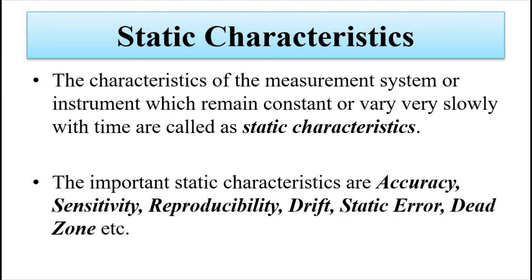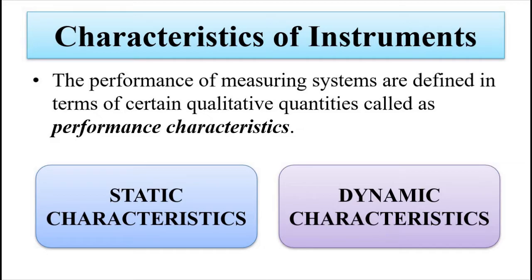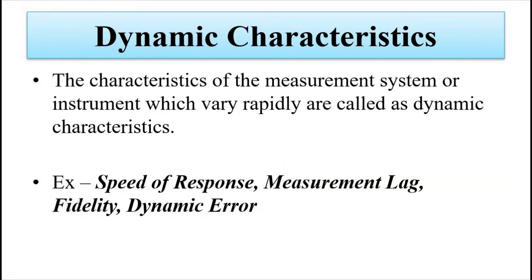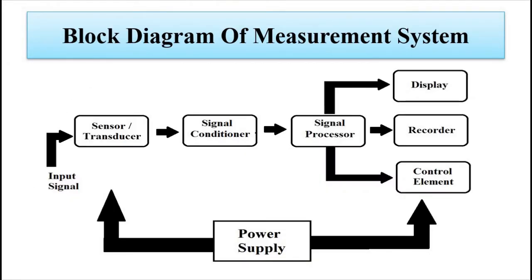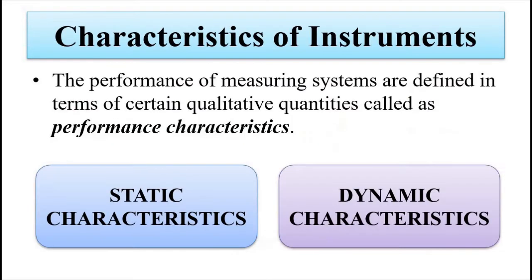Now we'll discuss the second part — the dynamic characteristics. The dynamic performance parameters are basically the parameters which vary very rapidly with respect to time. We know a basic measurement system consists of these two sets of performance parameters.